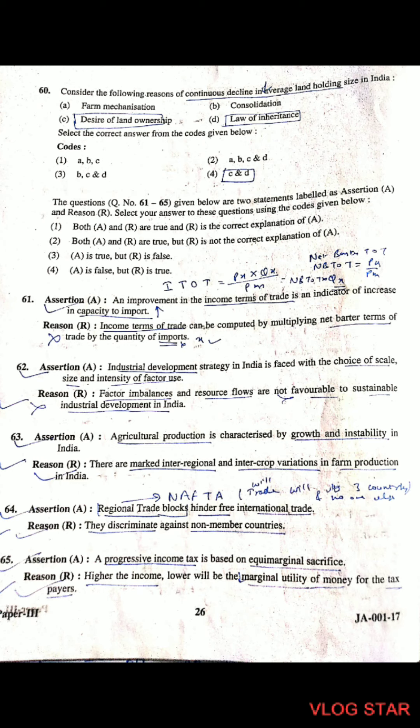Question 63: Assertion-Reason. Assertion: Agricultural production is characterized by growth and stability in India. Reason: There are marked inter-regional and inter-crop variations in farm production in India. Both assertion and reason are correct, and the reason is the correct explanation of the assertion.